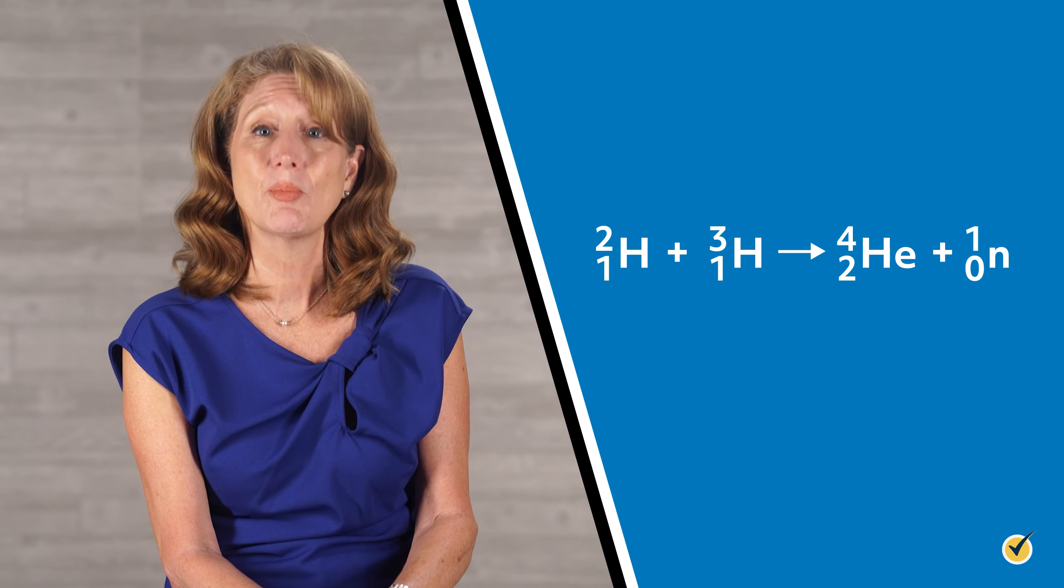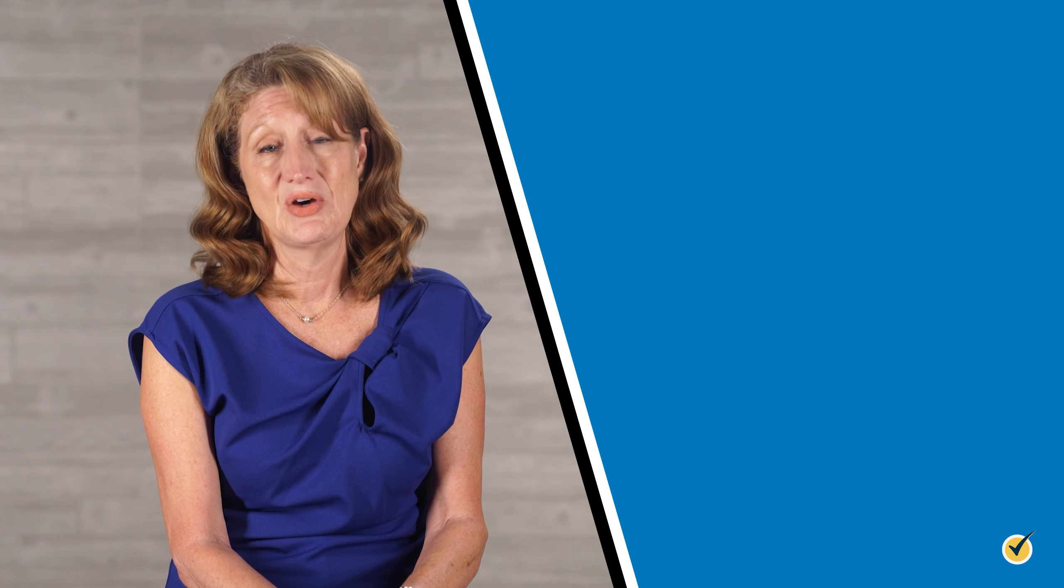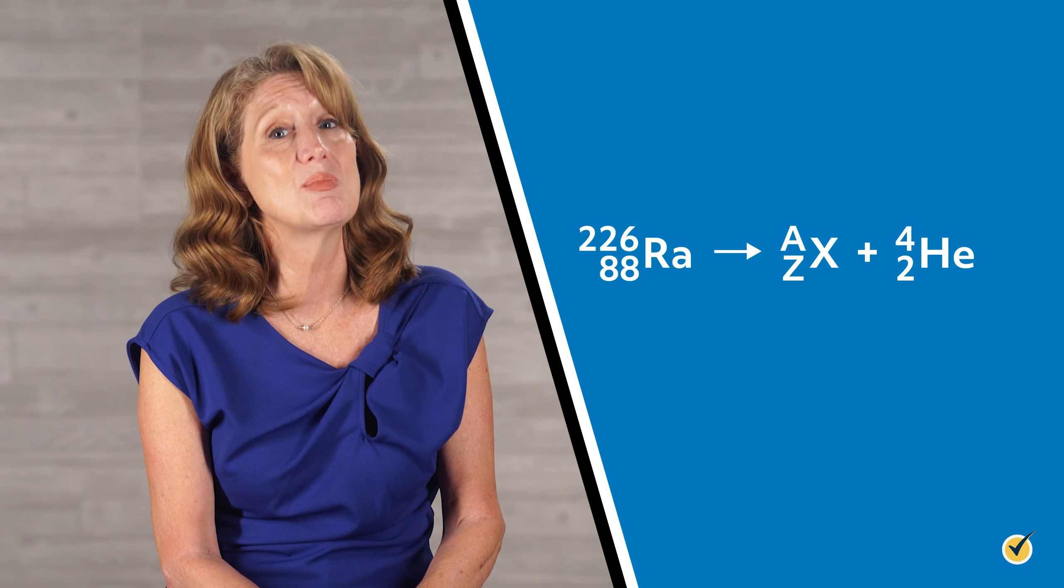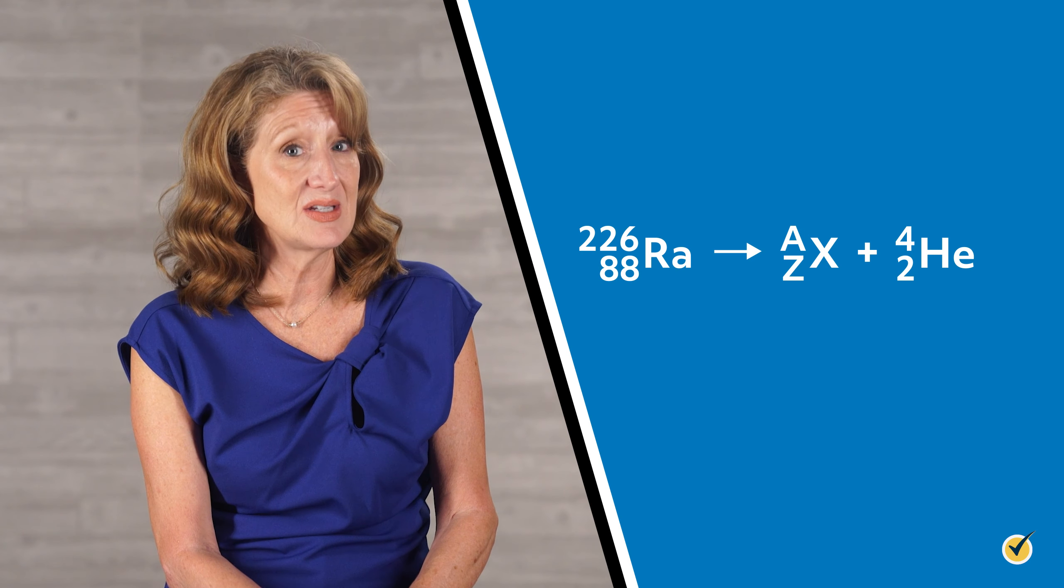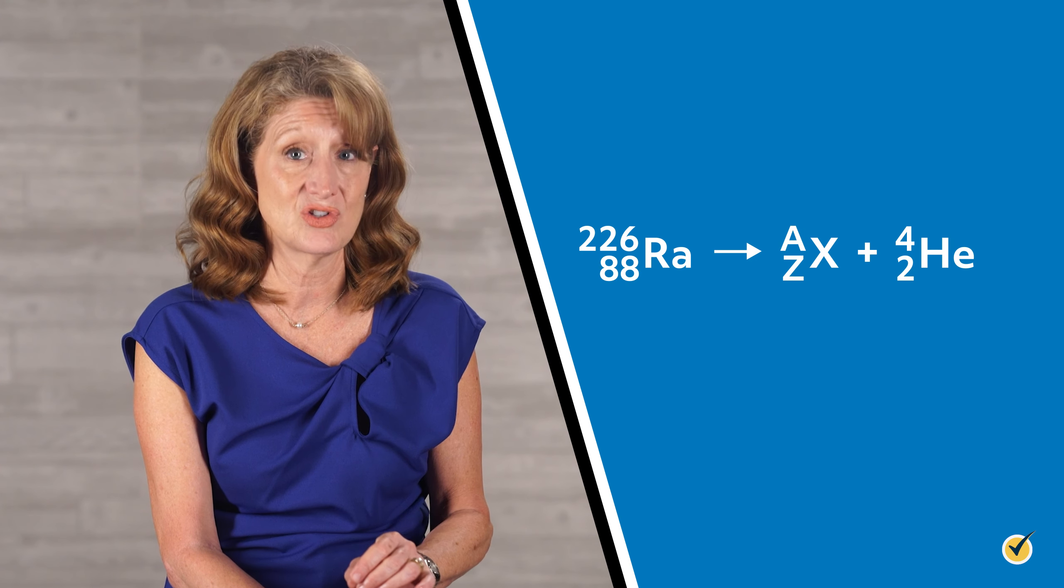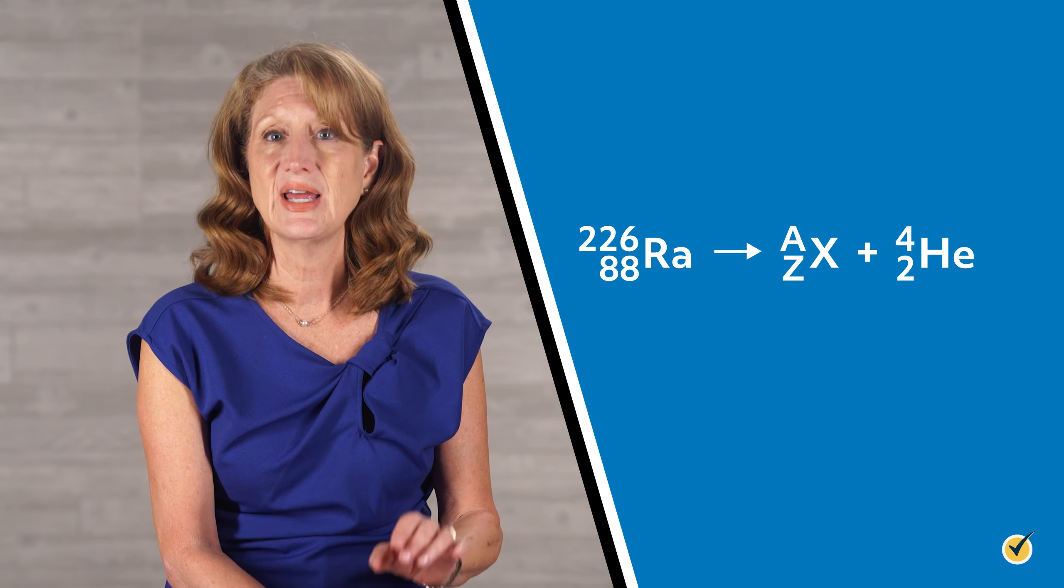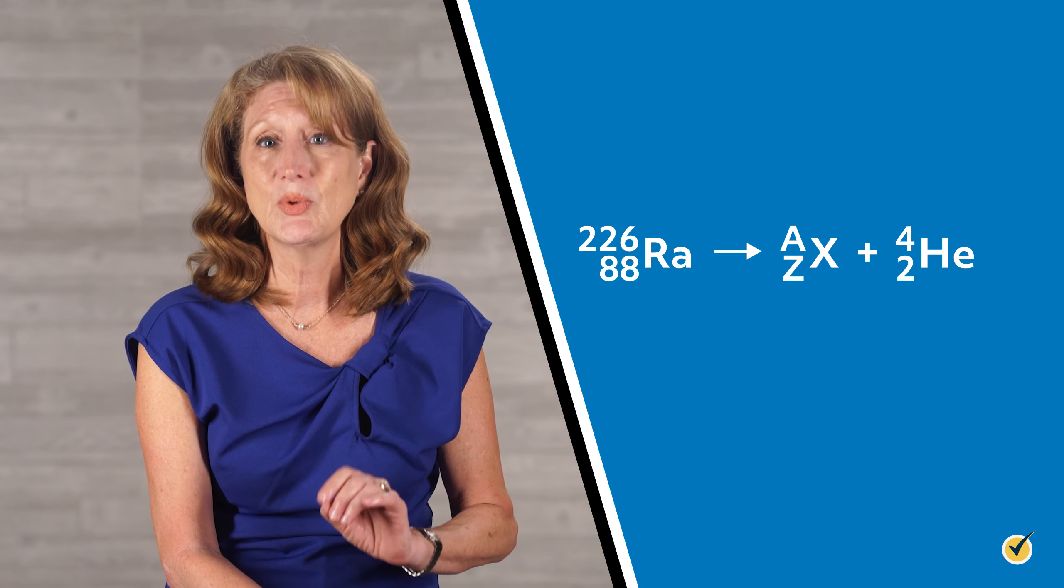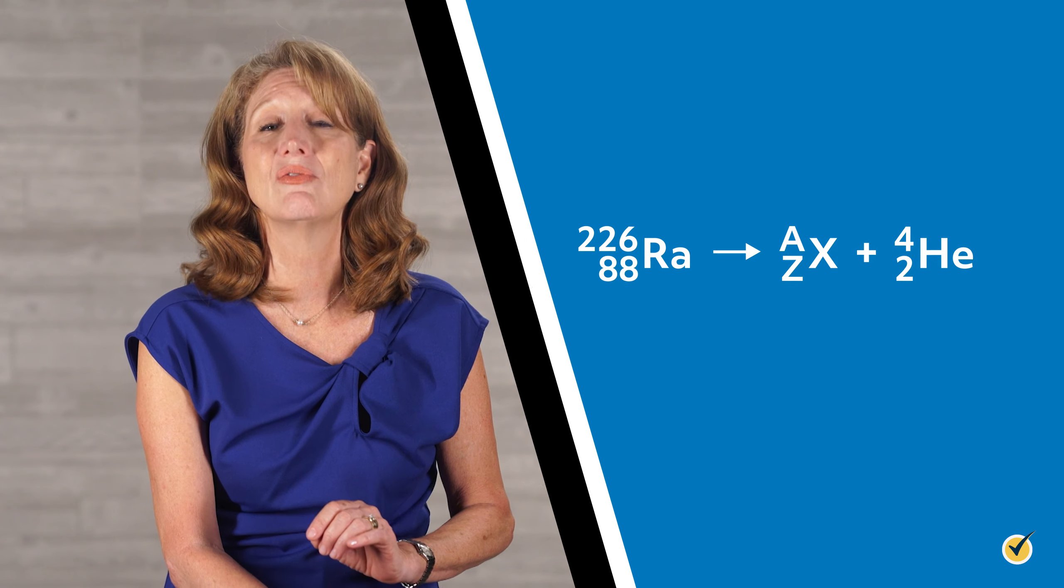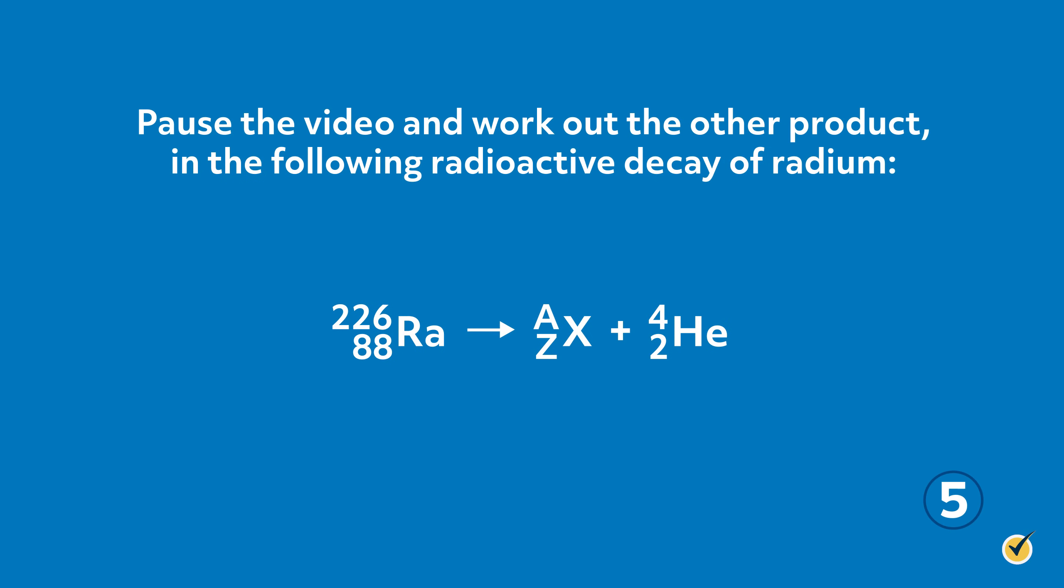This is also helpful for predicting products. For example, if we have an unknown product, we can solve for its identity by balancing the reactants. Pause the video and work out the other product, element X, in the following radioactive decay of radium.